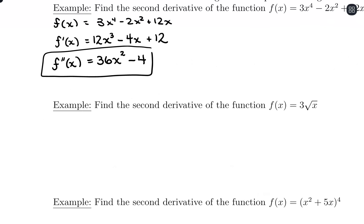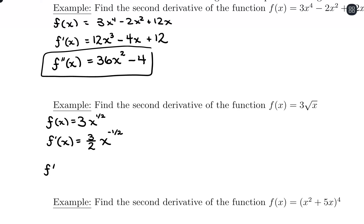Let's say our original function is 3 times the square root of x. I'm going to write this as 3 times x to the 1/2. First derivative: 3 times 1/2 is 3/2, times x to the 1/2 minus 1, so that's a negative 1/2. I'm not going to rearrange anything yet because I'm going to take the second derivative. So f double prime of x equals 3/2 times negative 1/2, which is negative 3/4, times x to the negative 1/2 minus 1, so that's a negative 3/2 exponent.